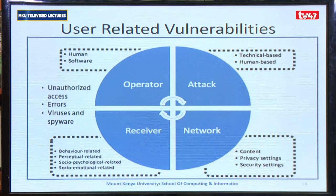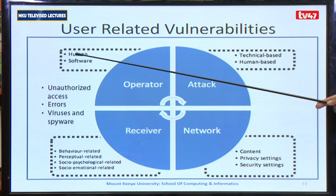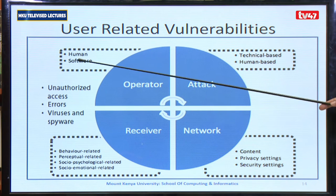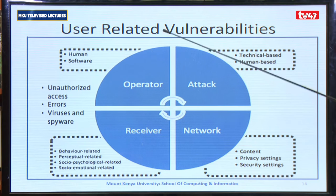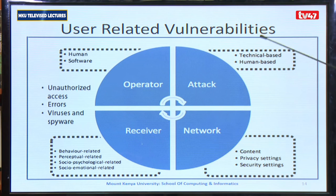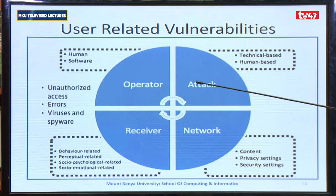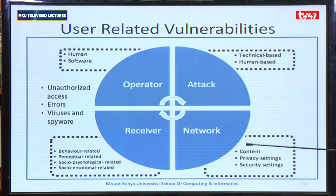Regarding user-related vulnerability — how does it happen? It starts from the human aspect, whereby using existing software within the system an attack can be launched. An attack can either be technical-based or human-based. Technical-based means it can be in the form of software like a virus. Human-based may be motivated by an ill-motivated employee who wants to corrupt the system. Once the attack happens, it may also come at the network level whereby content, privacy settings, and security settings are all compromised.